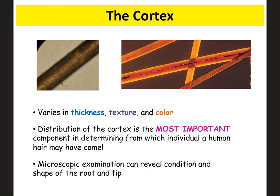The cortex, just outside the medulla, is the most important part of the hair for determining if it belongs to a specific person. Looking at the cuticle doesn't really help determine which person the hair came from, but the cortex would. The cortex can differ in color, thickness, and texture when comparing different individuals.